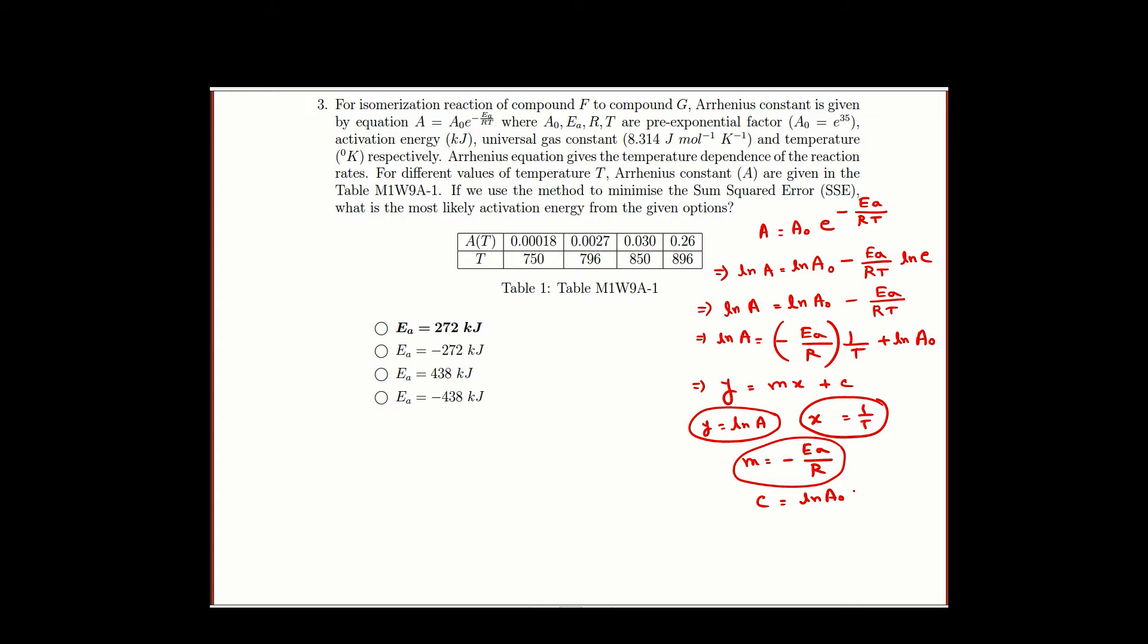And our constant c is ln of A0. Now A0 is given as E power 35, so it will be ln of E power 35 which is nothing but 35. So c is 35.